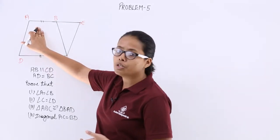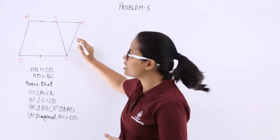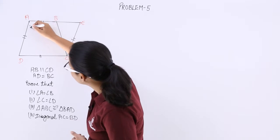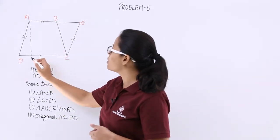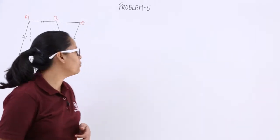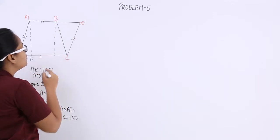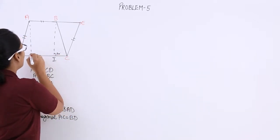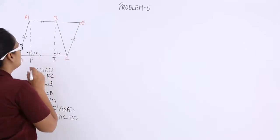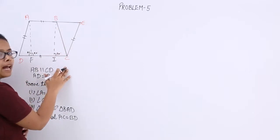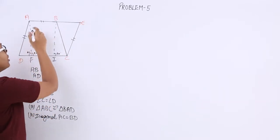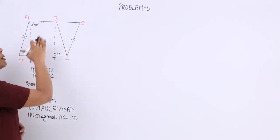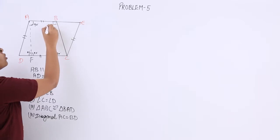It has been given that AB is parallel to CD, and CE is parallel to AD. What you will do here is draw a perpendicular — let's suppose this is AF — and draw another perpendicular from B, let's suppose this is BI. You know that this perpendicular is drawn on CD, and since AB is parallel to CD, if this line is perpendicular on CD, it will be perpendicular on AB as well. So this angle is also 90 degrees.